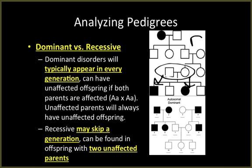Dominant disorders will typically appear in every generation and can have unaffected offspring if both parents are affected. So if we see two affected parents with an unaffected child, that tells you the trait is dominant. It's recessive if two unaffected parents have an affected child, and dominant if two affected parents have an unaffected child. Additionally, recessive traits appear less frequently than dominant traits, as you can see by looking at the percentages in the pedigrees.